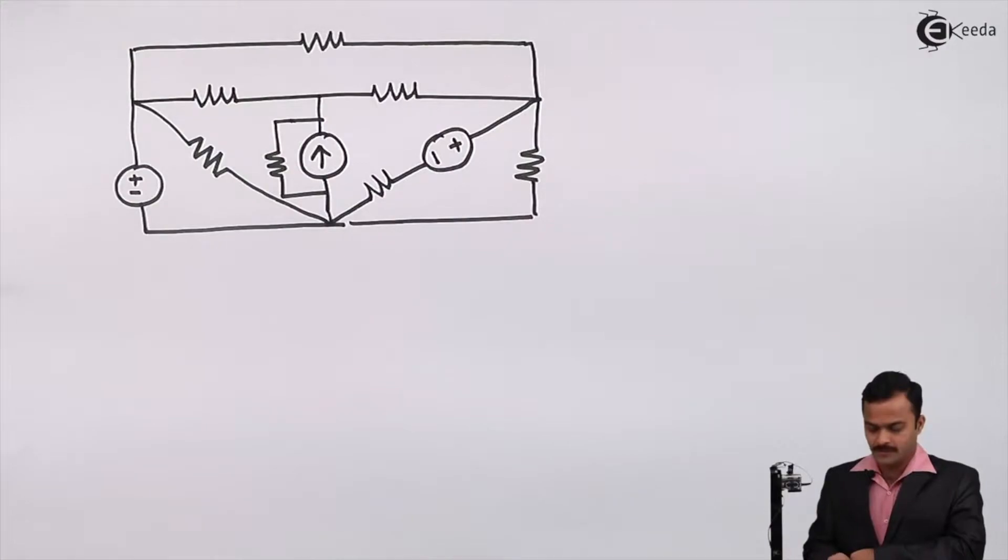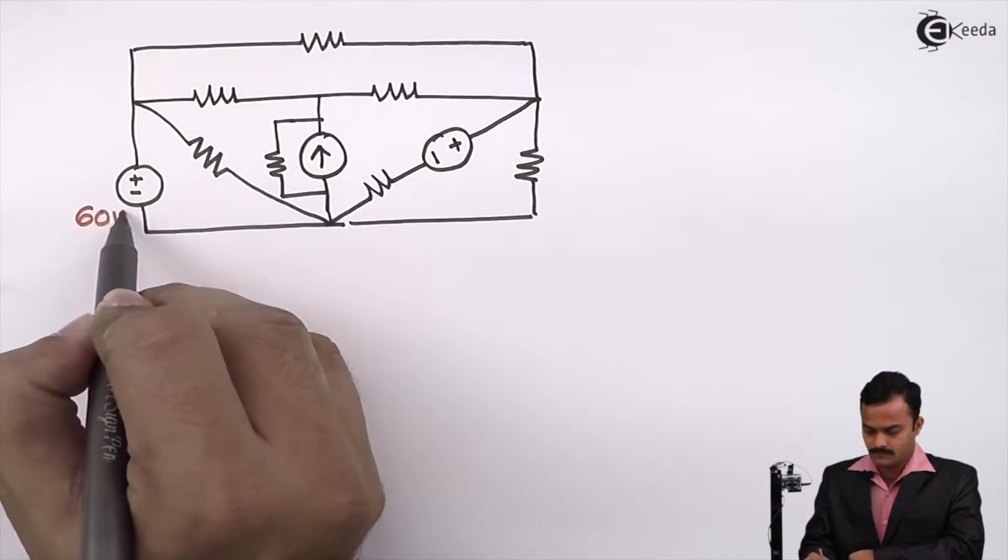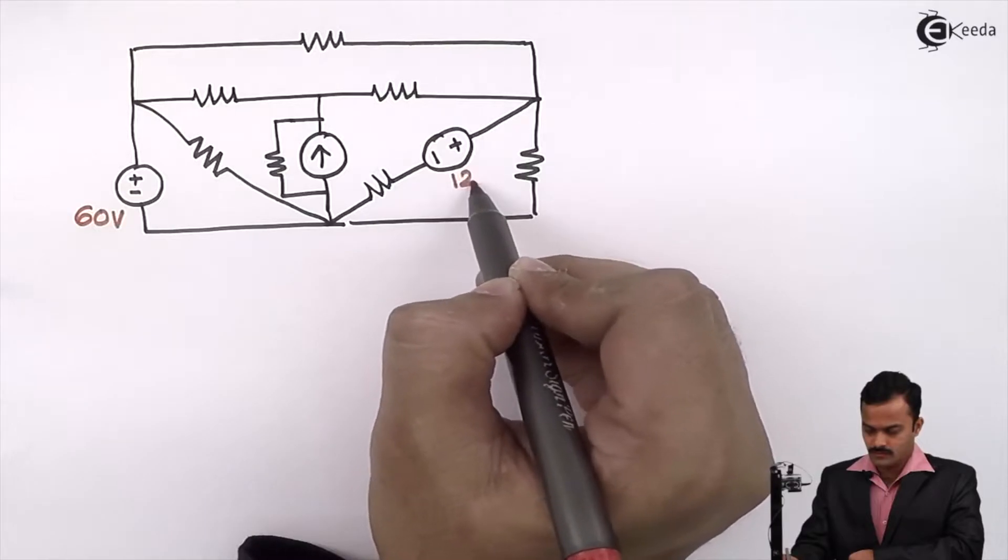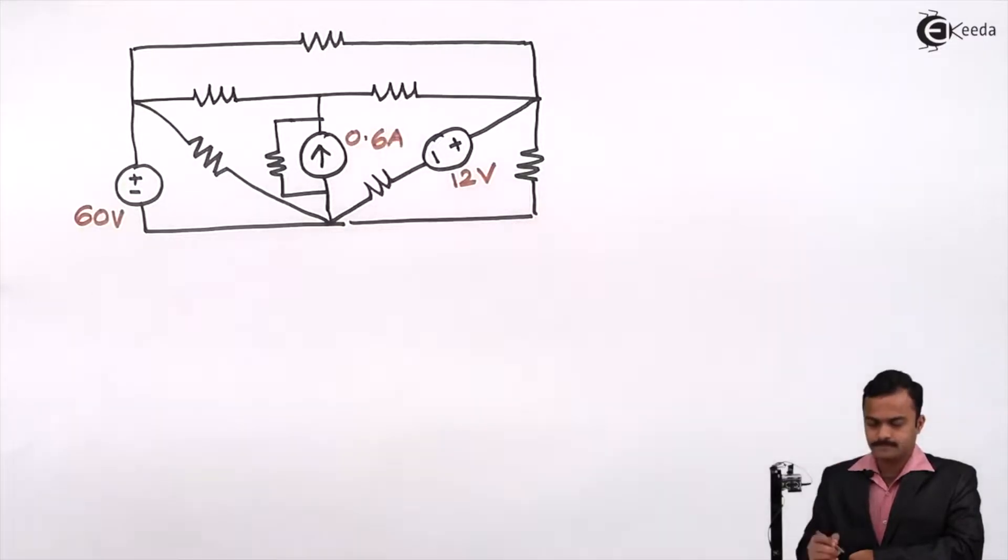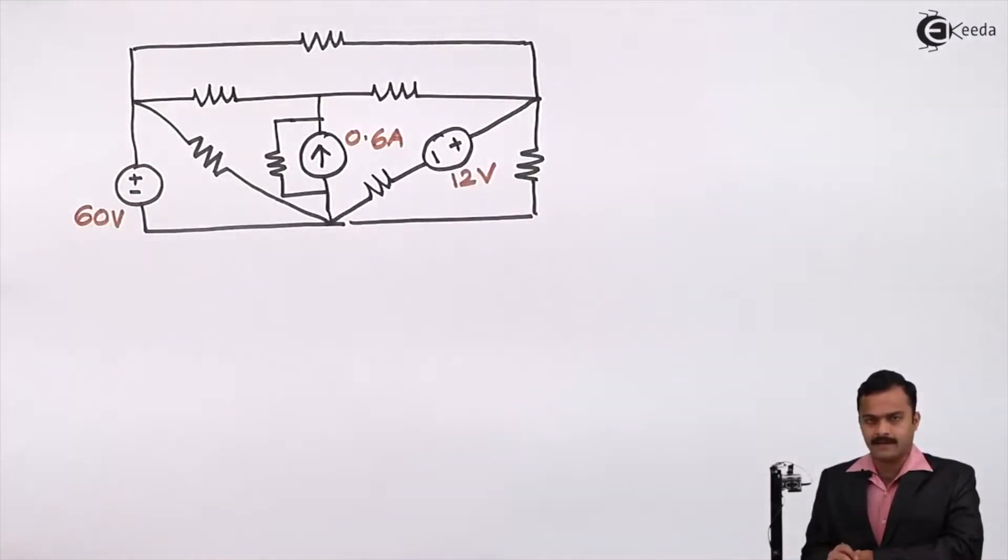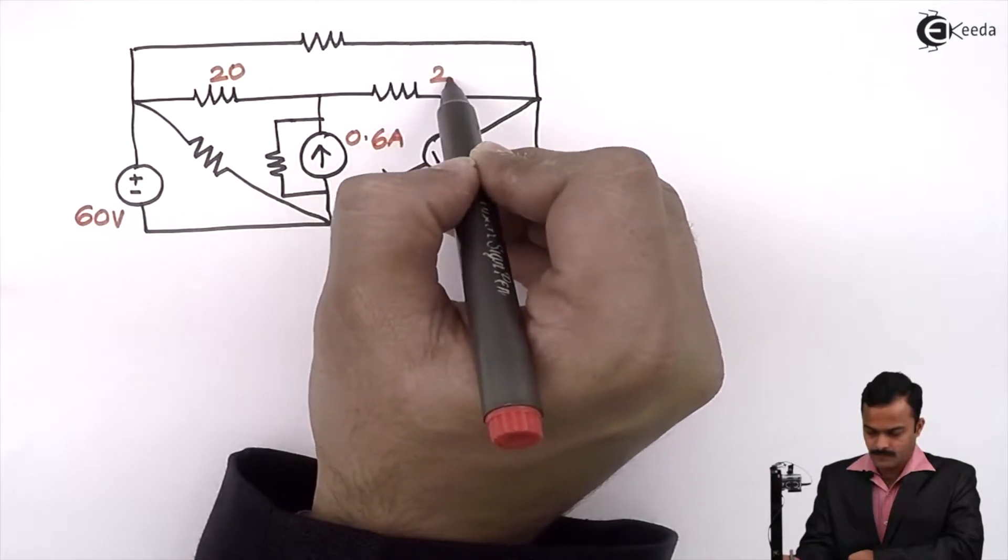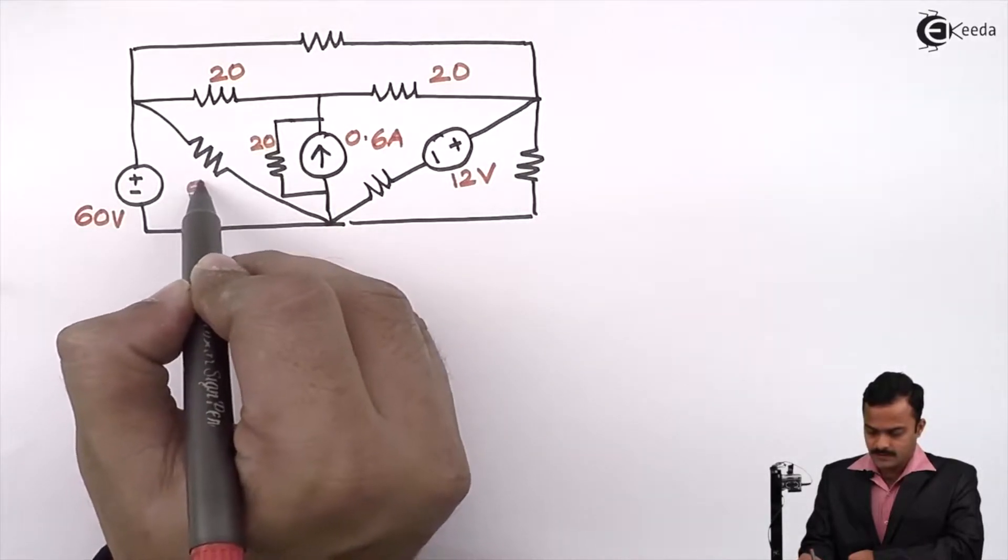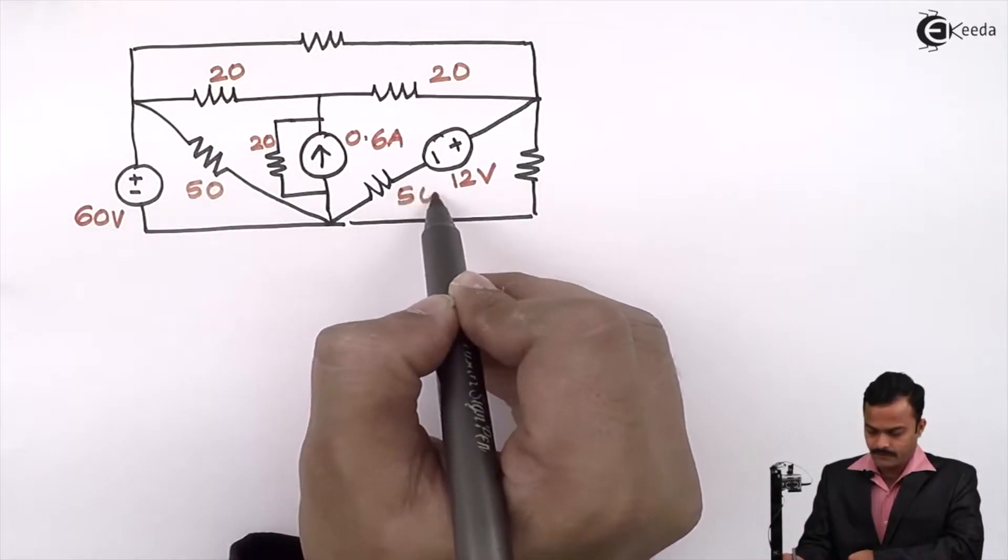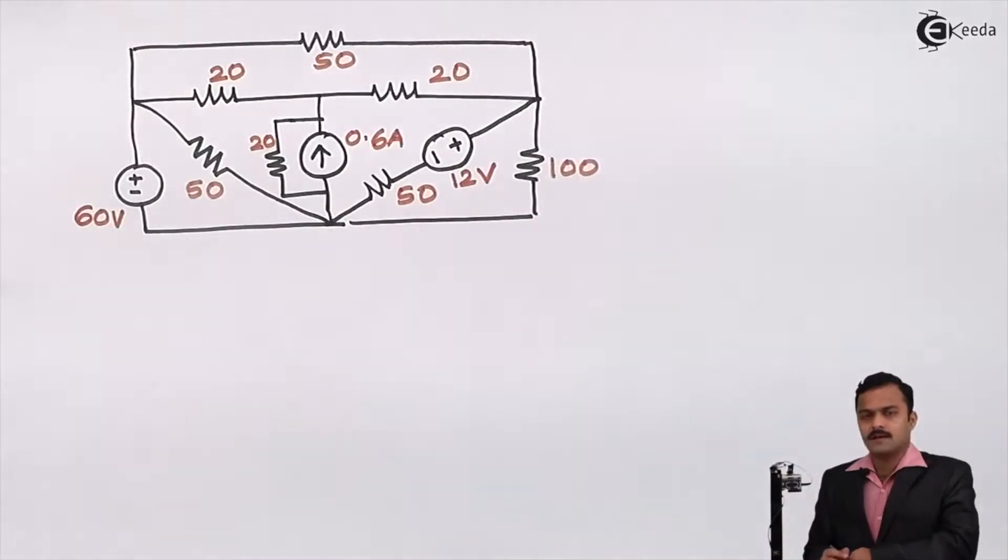In this circuit we have taken lots of sources and lots of resistances. Let's take this voltage source of 60 volts, this voltage source of 12 volts, current source 0.6 ampere, and so many resistances are connected. Let's give values to them: 20 ohms, 20 ohms, this is also 20 ohms. These are 50, 50, one more 50 ohm, and this resistance is 100 ohms.